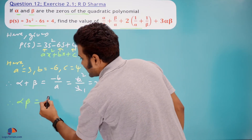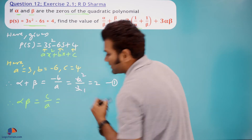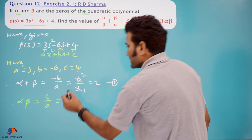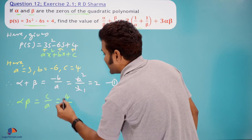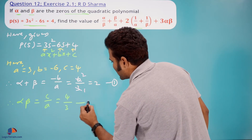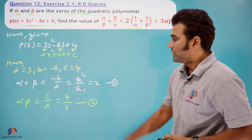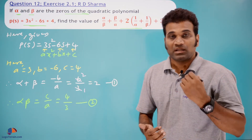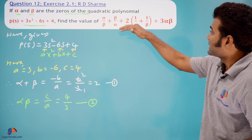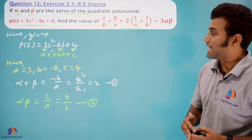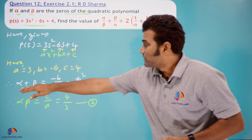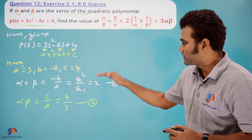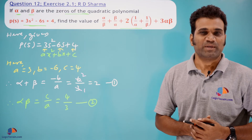Now we find the product of zeros: alpha × beta = c/a, that is the constant term upon the x² coefficient. Here constant is 4 and x² coefficient is 3, so alpha × beta = 4/3. Let's call this equation (2). Now we have alpha + beta and alpha × beta, and we will convert the required expression in terms of these values, then substitute and simplify.